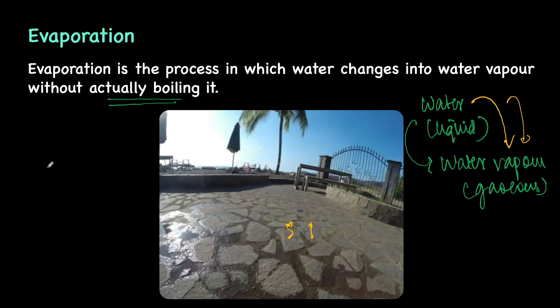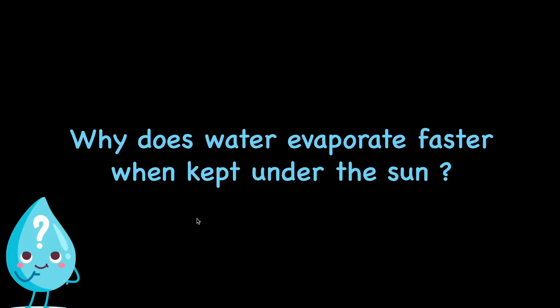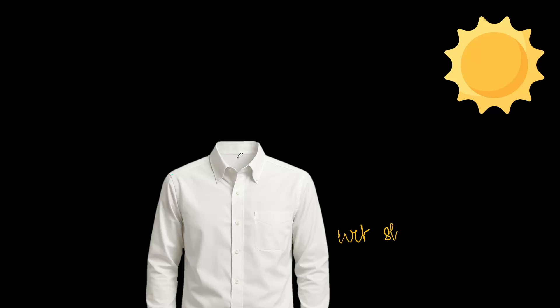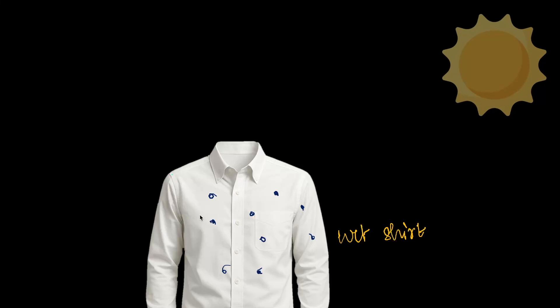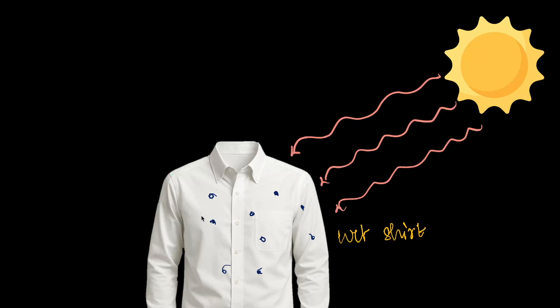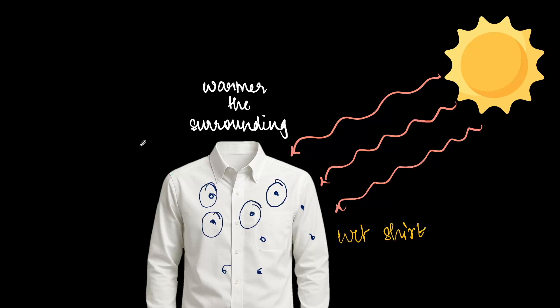Now, wet clothes become dry by the process of evaporation. Let's say I put a wet shirt out under the sun — why is it that water evaporates faster when kept under the sun? Imagine I have this wet shirt with water droplets present on it, and I put it out to dry on a nice sunny day.